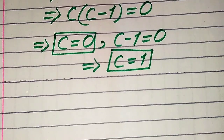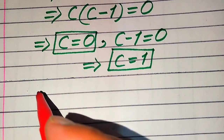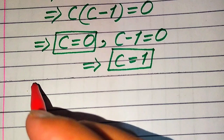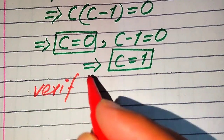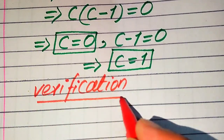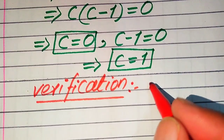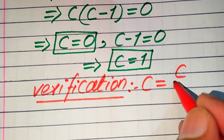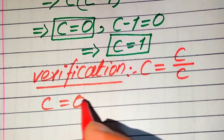Now we have found the two roots of the given equation. In the next steps we need to verify whether these two roots are solutions or extraneous roots. For verification, we copy down the given equation: c equals c divided by c. On this side we verify c equals 0, and on this side we verify c equals 1.